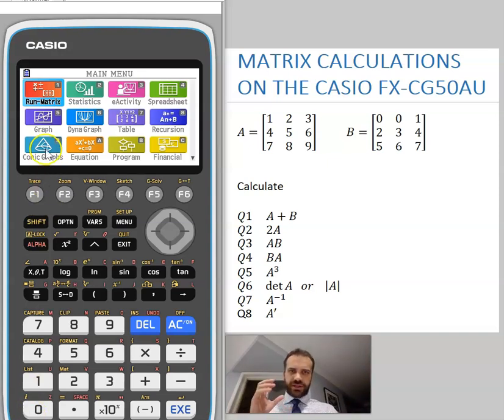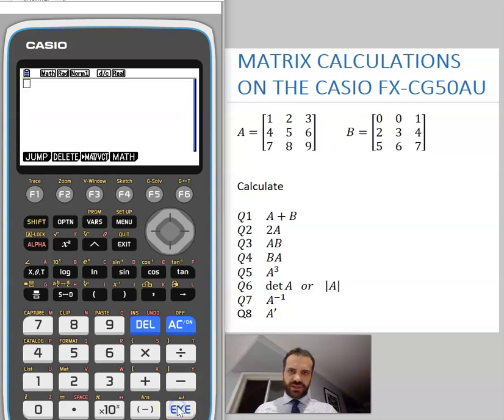We're going to be doing matrix calculations on our Casio calculator. Pretty straightforward. We're going to go into the run matrix mode here and then click this button, which says matrices/vectors.